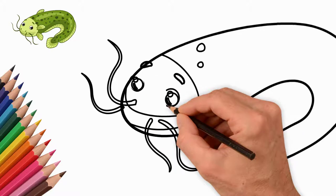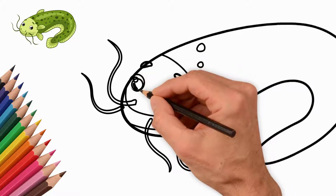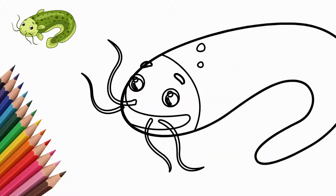Now draw the eyebrows and eyes of the catfish. We draw eyes. They are round and large. We draw the pupils of the eyes.